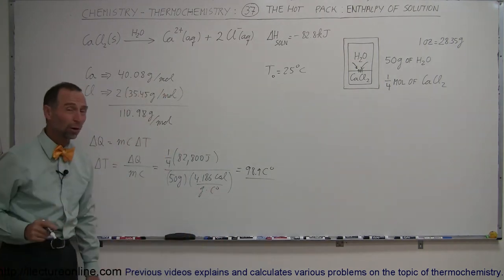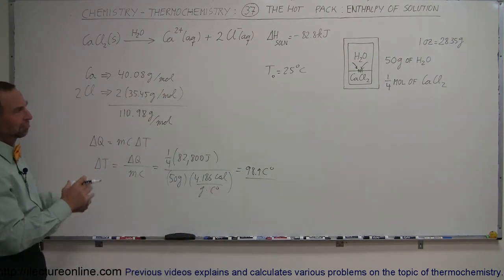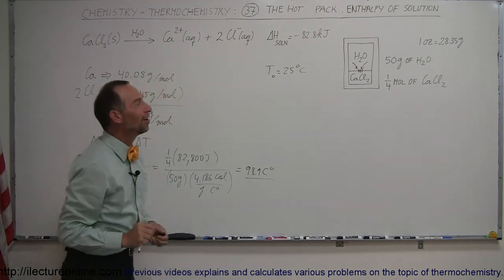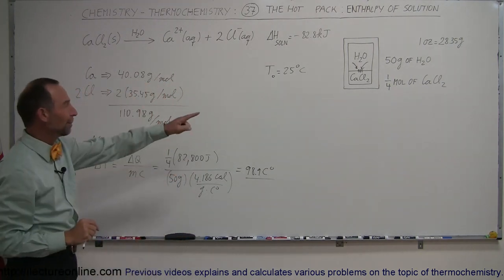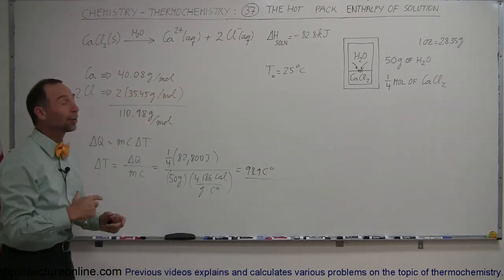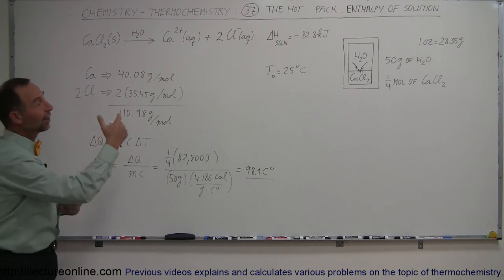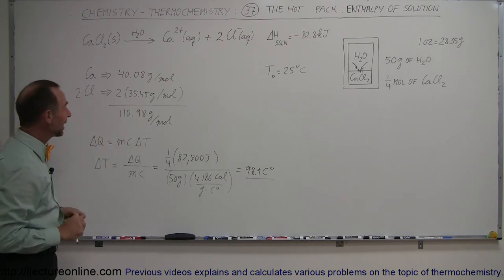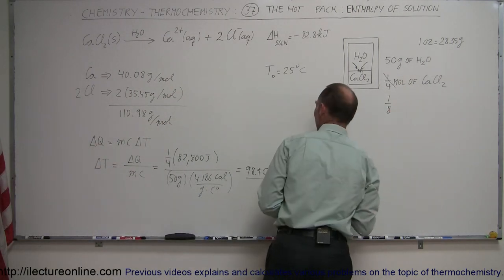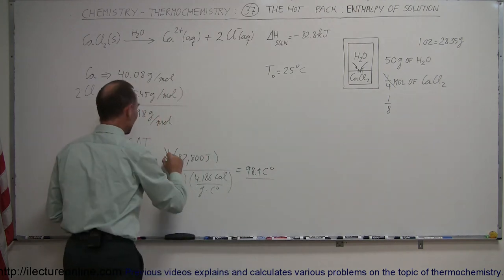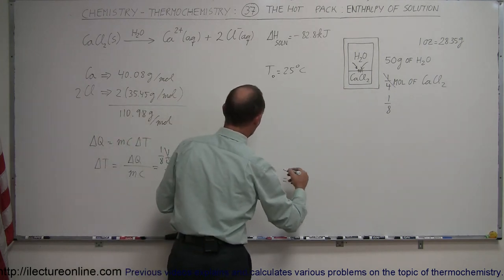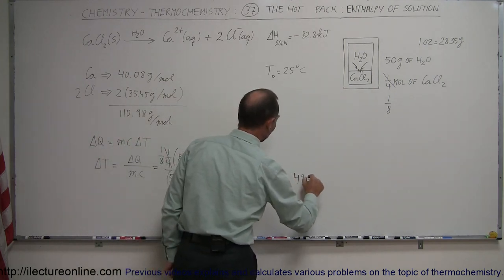So probably, I just took those numbers out of the air, probably they will not put this much calcium chloride in the package, because that would make the water in the package boil. If you start at 25 degrees centigrade, it would be over 100 degrees centigrade. Now, could be that the boiling point of water is higher with that calcium chloride dissolved in it, but I wouldn't want to take any chances. So probably what I would like to do is change this to maybe one eighth of a mole. We'll change this to one eighth of a mole, and then divide this by two, and then we have a temperature change somewhere in the neighborhood of 49.5 centigrade degrees.